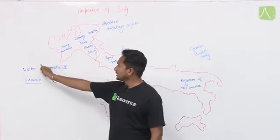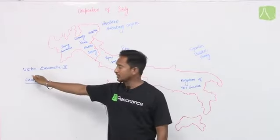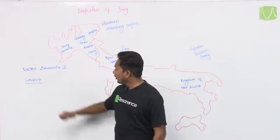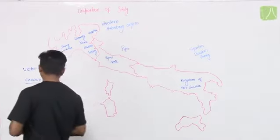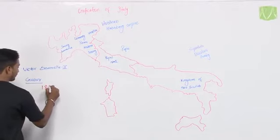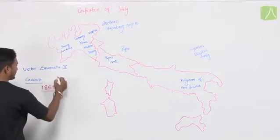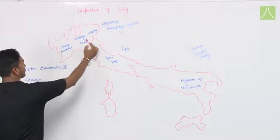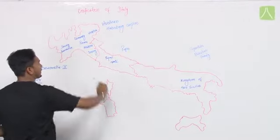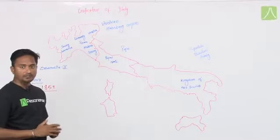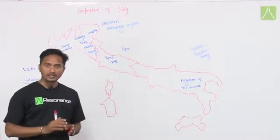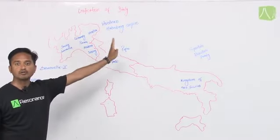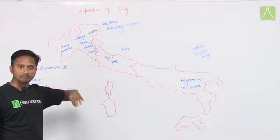Cavour spoke French better than Italian. With a tactful diplomatic alliance with France — France's empire bordered Italy — he made a diplomatic alliance, and in 1859 he joined with France's army to attack the northern part of Italy where the Austrian Habsburg Empire had control. The attack was very successful, and he drove out the Austrian Habsburg Empire's army from there.